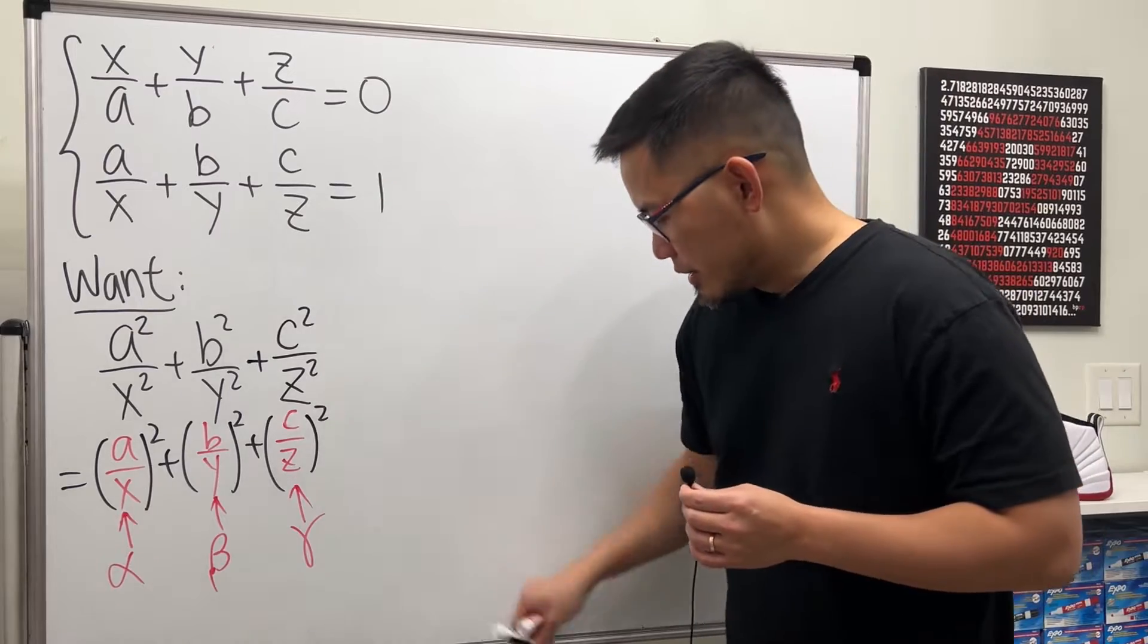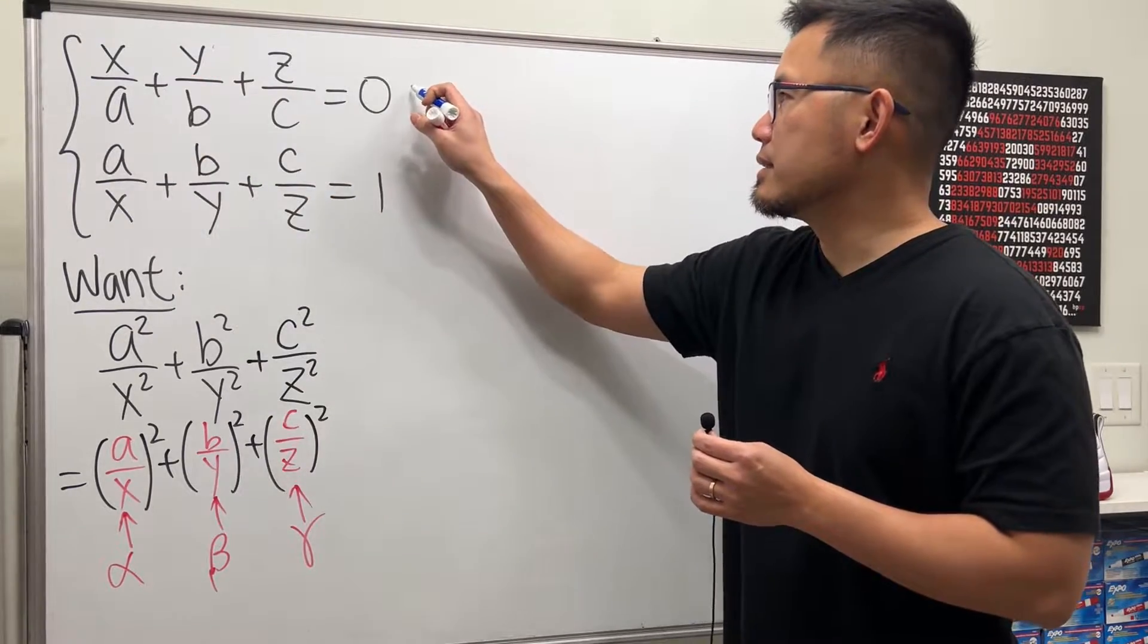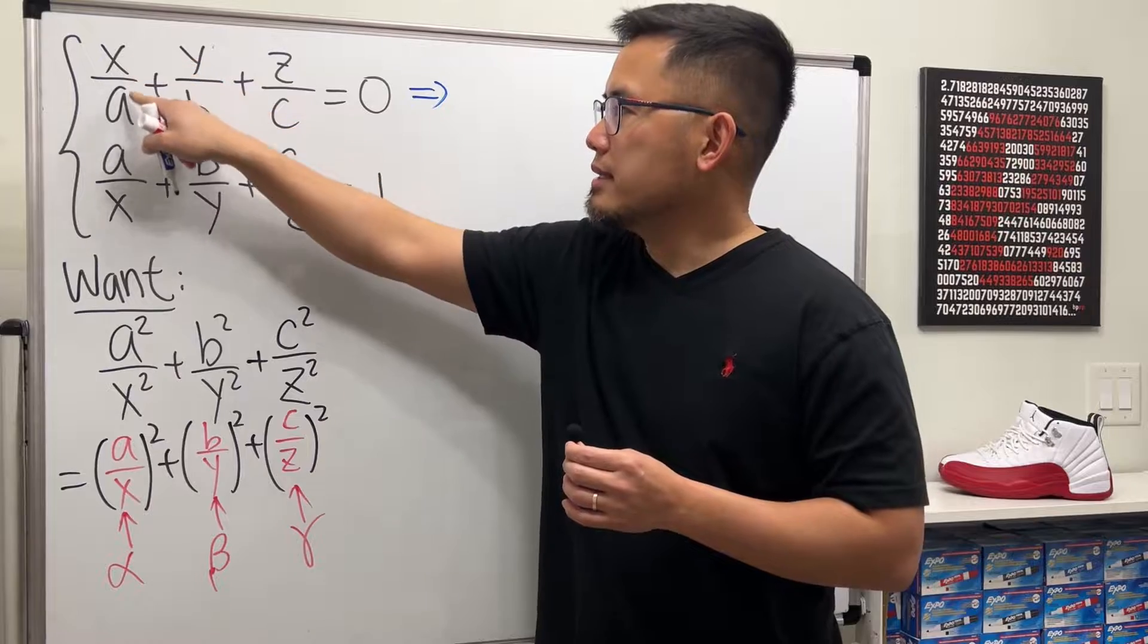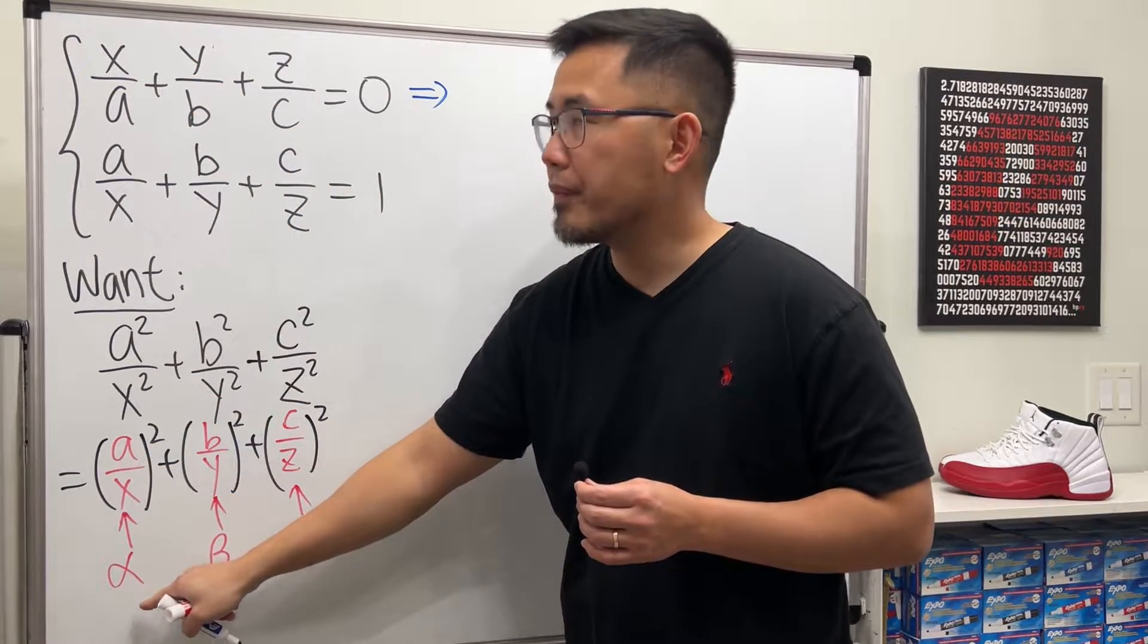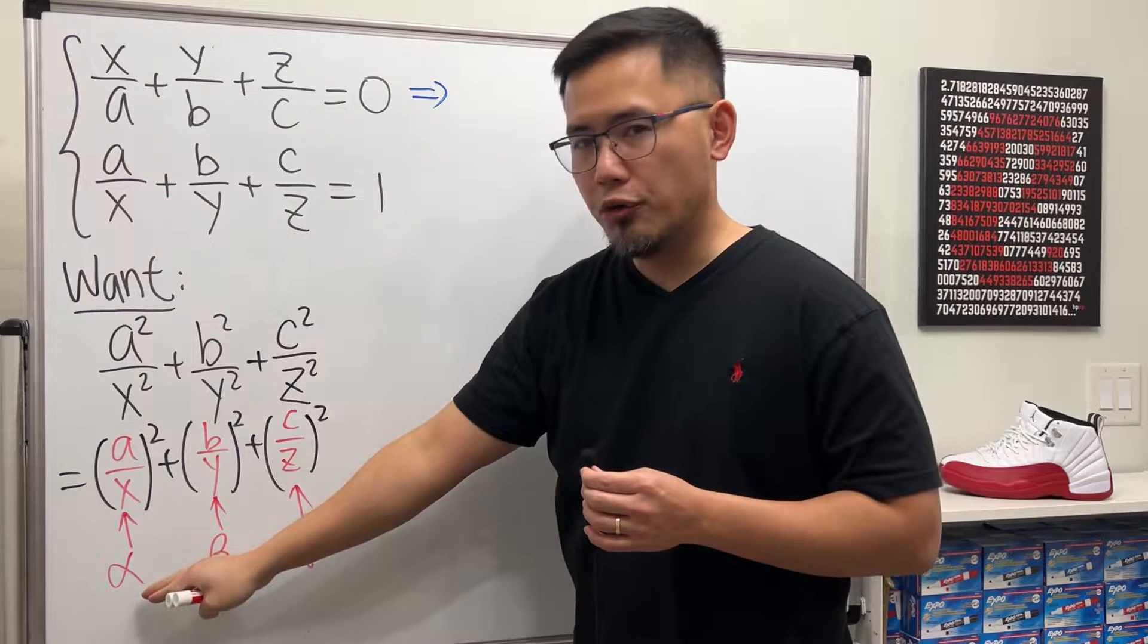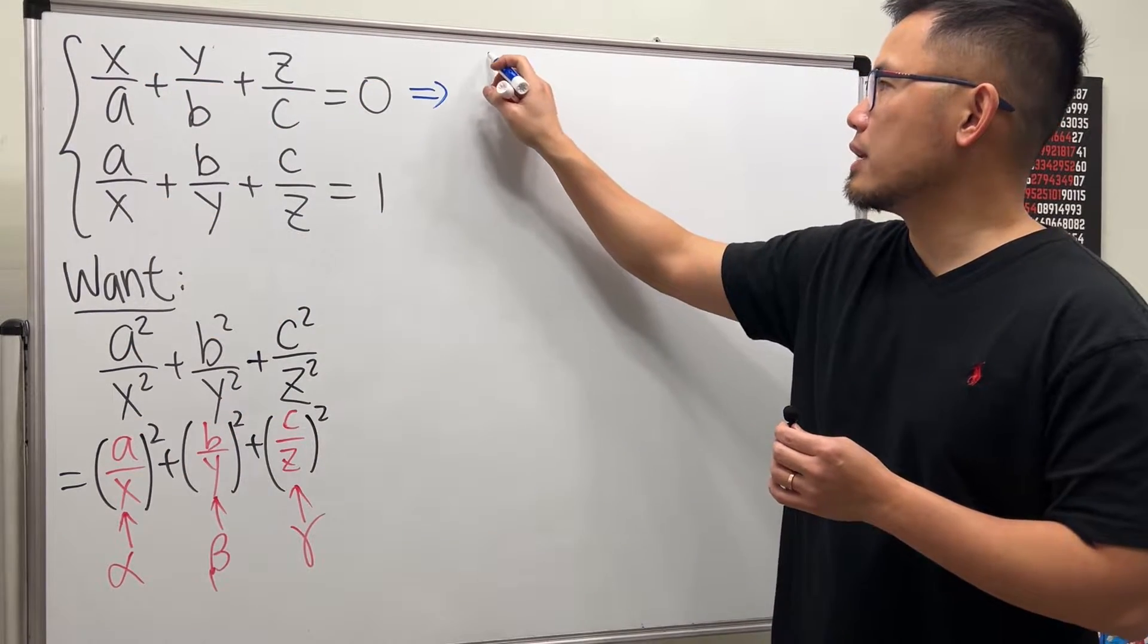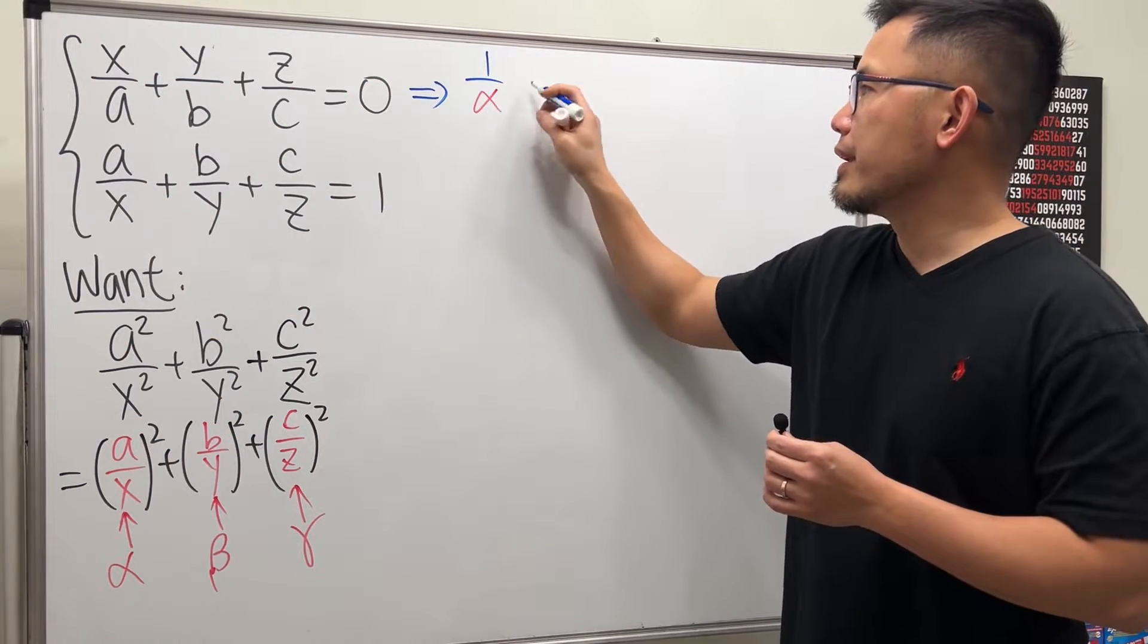Anyway, take a look at the first equation. We can rewrite this a little bit. x over a, well, here's a over x. a over x is alpha. This is just the reciprocal of alpha. So we can look at the first part as 1 over alpha,